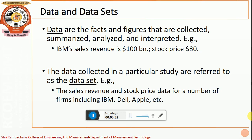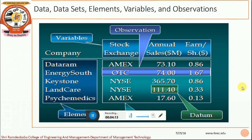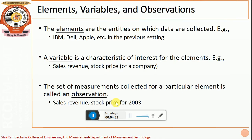The data collected in a particular study are referred to as the data set. That is, if we are considering the stock price and sales revenue of various firms like IBM, Dell and Apple, then the set of values of all the companies put together is called a data set. For example, in the given table, several stock exchanges with their respective annual sales and share holdings are the data, and the various companies considered are called the data set.